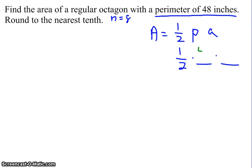We're already given a perimeter of 48 inches, so I can plug that one in already. So the rest of our time is going to be devoted to figuring out what this apothem is and make sure we round correctly.